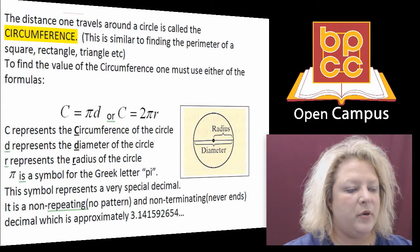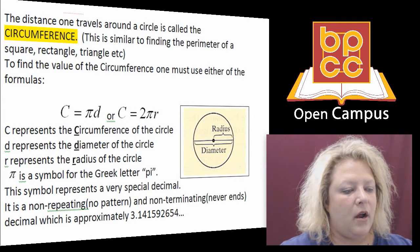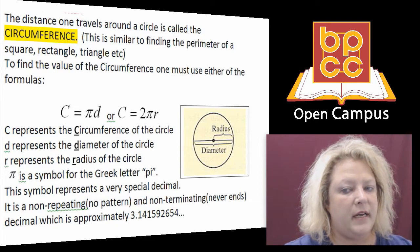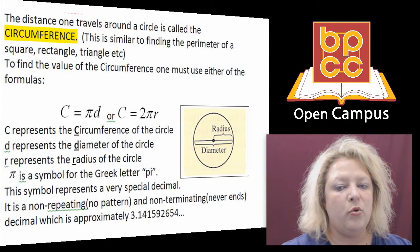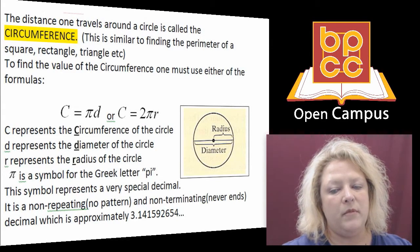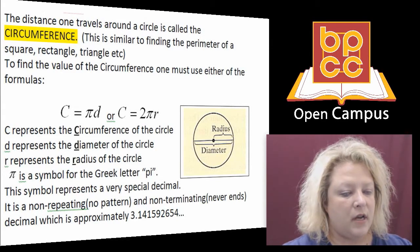Like if you were going to put an edging around a tree that you had planted in your yard, or you wanted to put a walkway around a pool that you have in your yard, that is called the circumference.